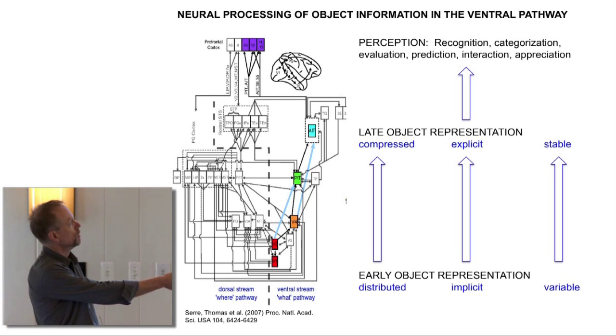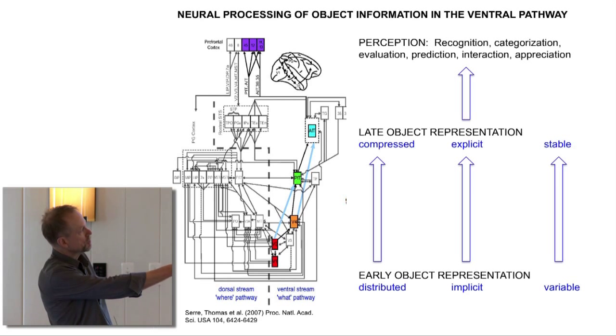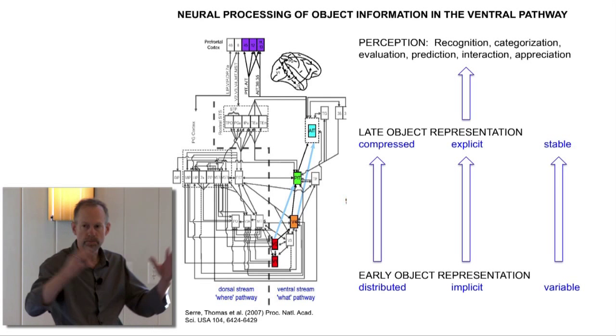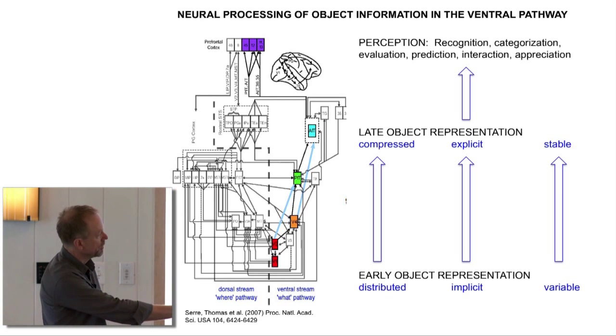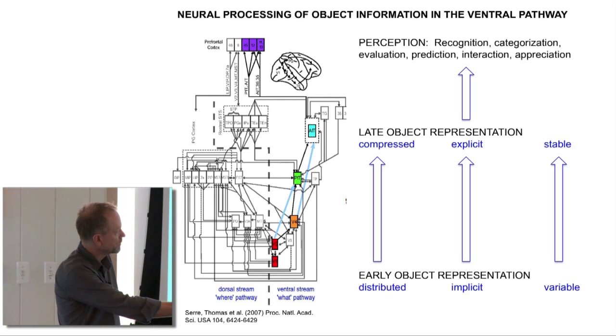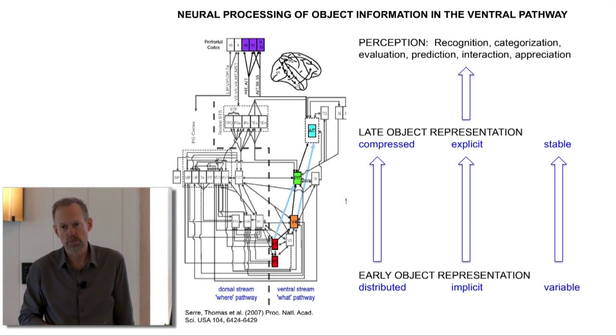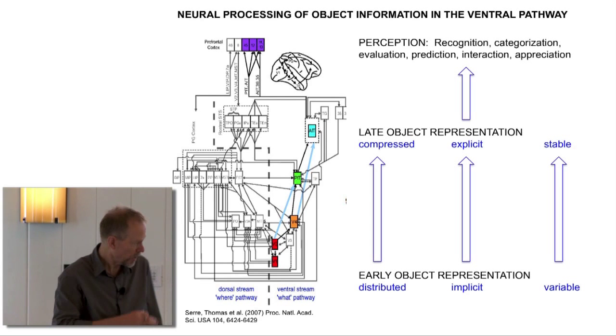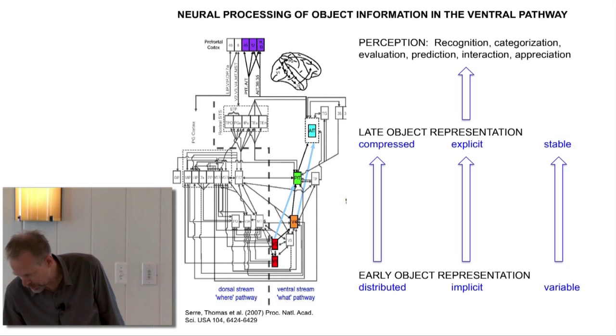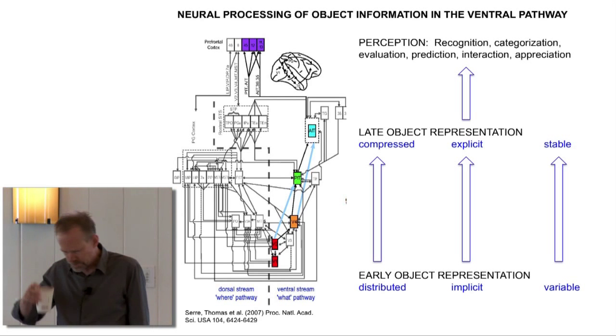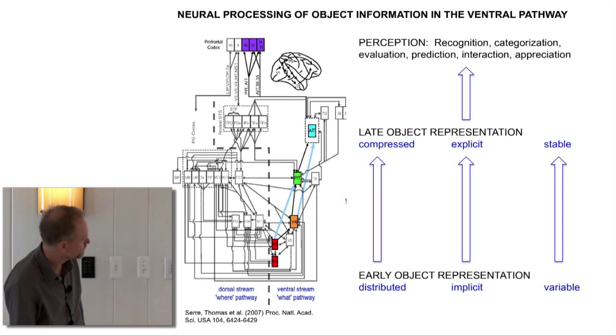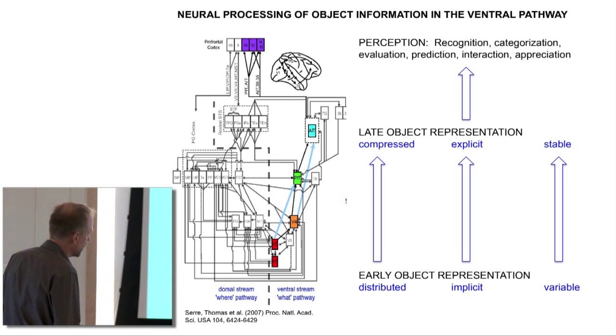You basically want to do this decoding once in the ventral pathway and then make that available to the rest of the brain. And finally, you have to turn something that's extremely variable into something that's much more stable. People are going to be touching on these themes throughout the conference.